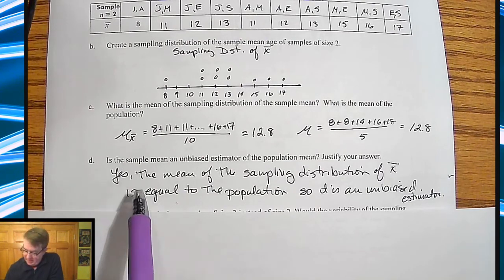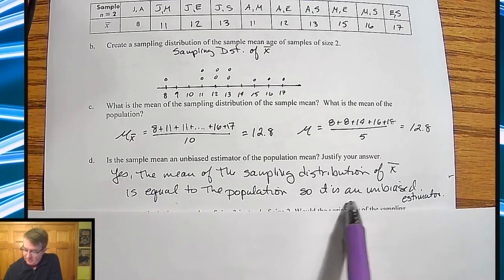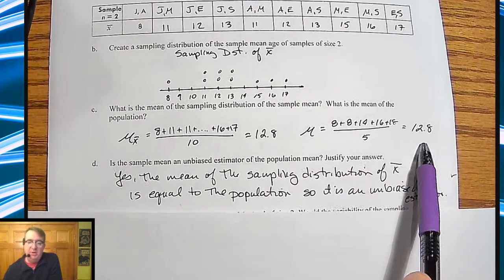Is the sample mean an unbiased estimator of the population mean? Well, yeah, because yes, the means of the sampling distribution of x bar is equal to the population. So it's an unbiased estimator. These two numbers are equal or relatively close to equal. We'll talk more about that as we go. So unbiased estimator, we're good to go. If it's not, we'll talk about what to do there as well.